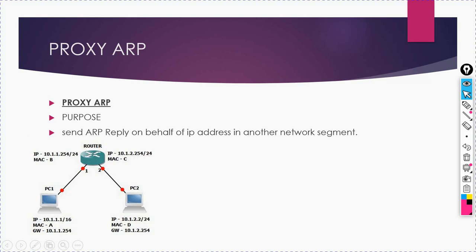If this PC wants to communicate to another PC, on behalf of that PC the router responds back with its own MAC address. Why does this condition arise? You need to find out. This is related to the AND operation.